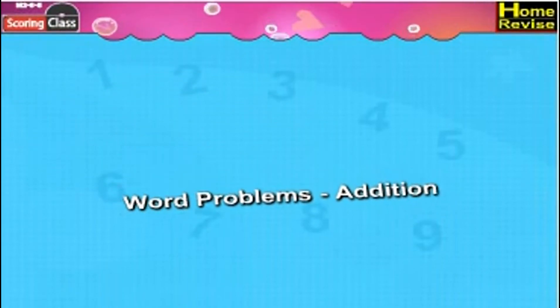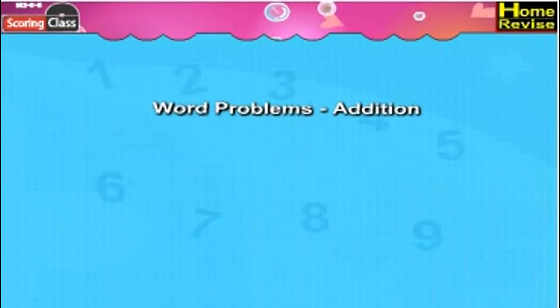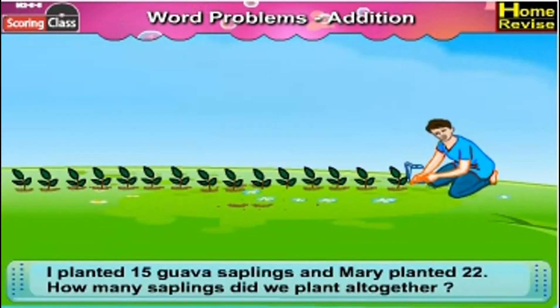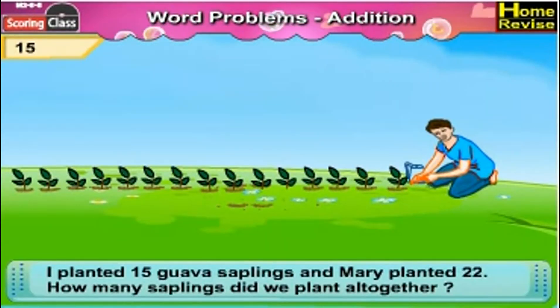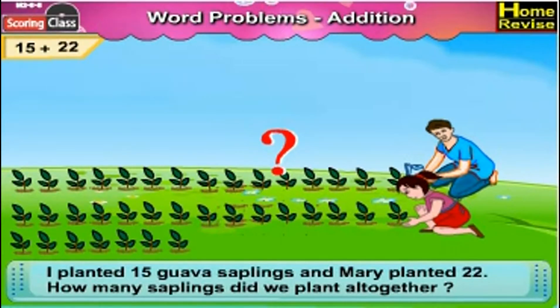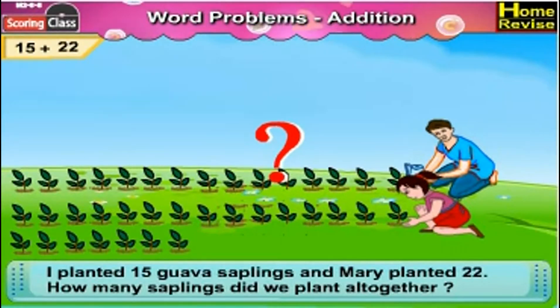Make word problems of your own for the following additions. I planted 15 guava saplings and Mary planted 22. How many saplings did we plant altogether?